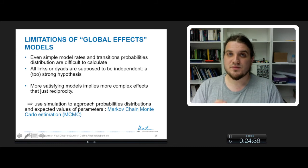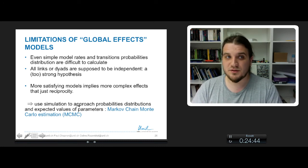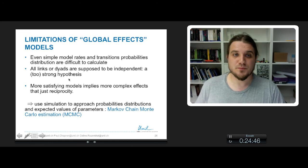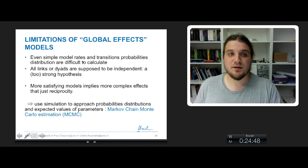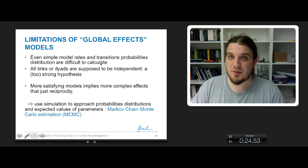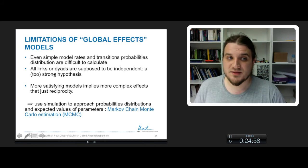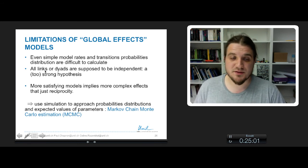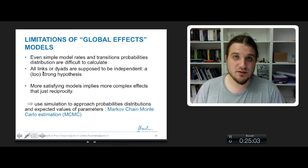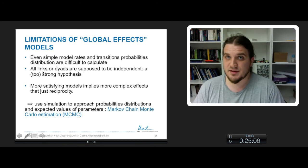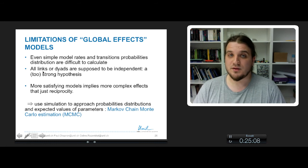These were simple models, really simple models, but it helps us to understand how the Markov chain can model the evolution of some networks. Even if it's simple, the transition probability equations are difficult to calculate. The hypothesis under which all links and dyads are independent is really too strong. We know that we are in a network and everything is related in a network, so supposing independence of arcs is really, really cheap.